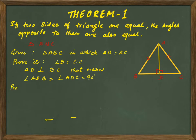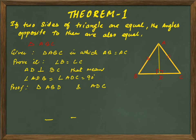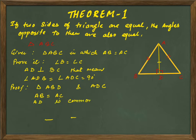Now we come to the proof. We have two triangles: triangle ABD and triangle ADC. We want to show they are congruent — congruent means the two triangles are the same and we can place one onto the other. We know that length AB equals length AC, and AD is common in both triangles.